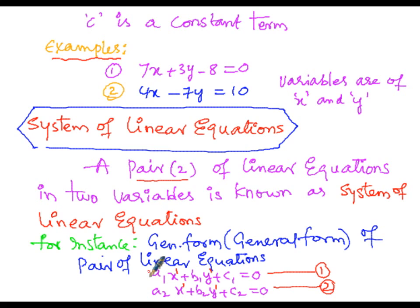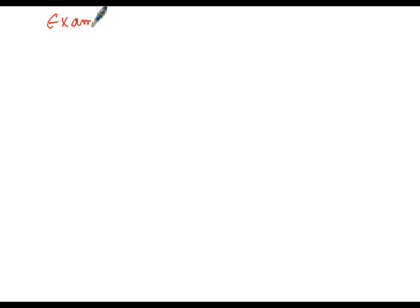Here a1, b1, c1 are the real constants of the first equation, and a2, b2, c2 are the real constants of the second linear equation. The values a1 and a2 are the coefficients of x, b1 and b2 are the coefficients of y, and c1 and c2 are the constant terms. These two equations together are also called a system of simultaneous equations.